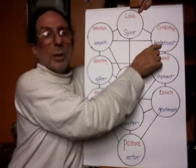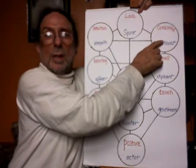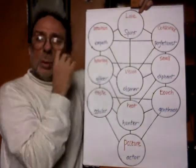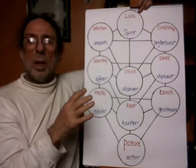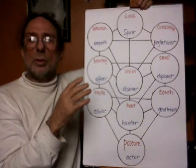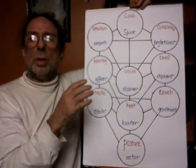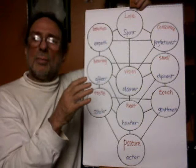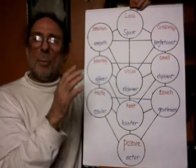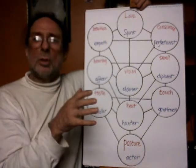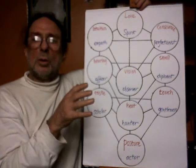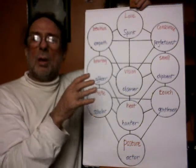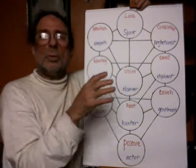Here we have the conscience and the perfectionist. We move in a straight line; we can understand the conscience as when we don't follow a straight line, and then we have the personality of a perfectionist. The conscience is our consciousness of seeing the future movement.